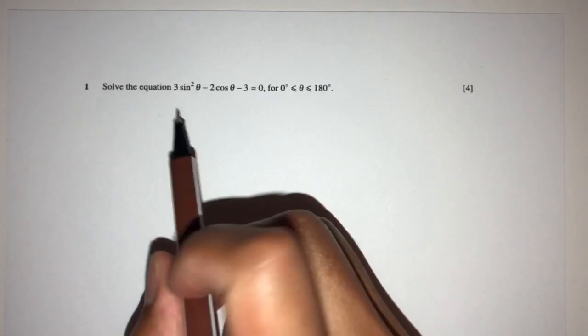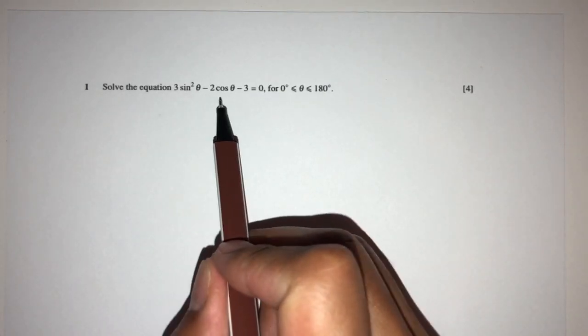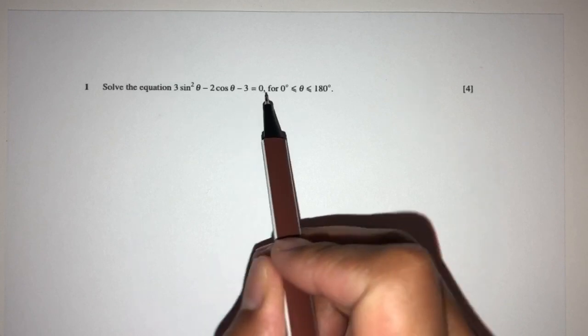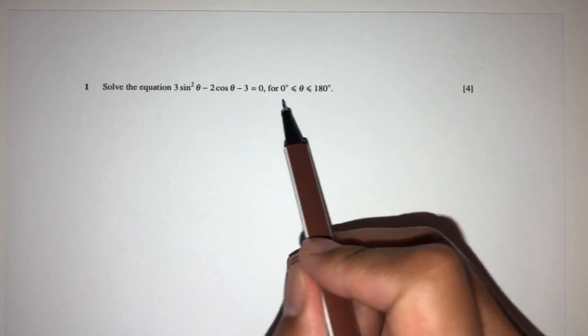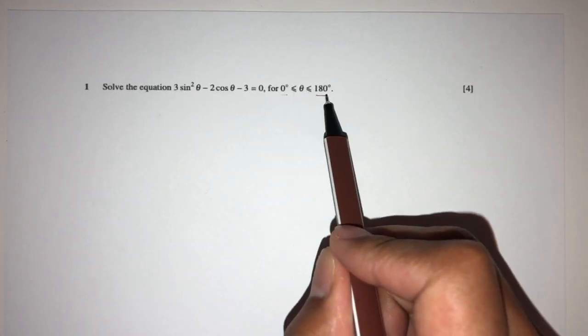So here we have to solve the equation 3 sine square theta minus 2 cos theta minus 3 equal to 0 for the value of theta between 0 and 180 degrees.